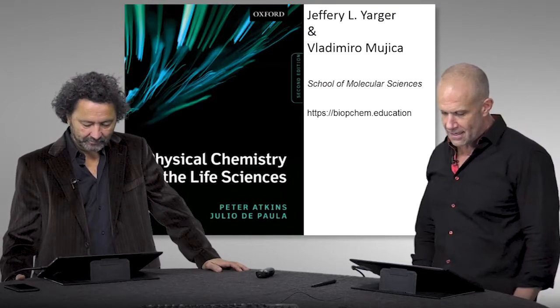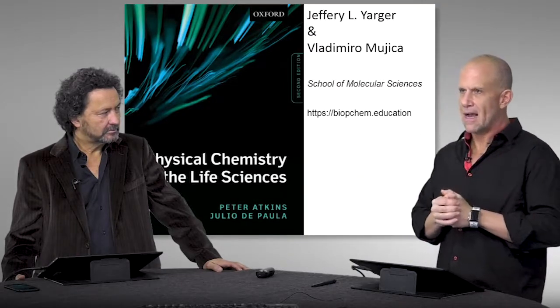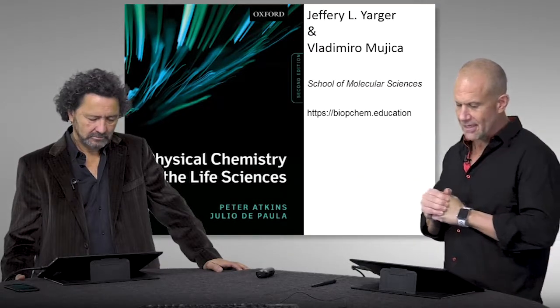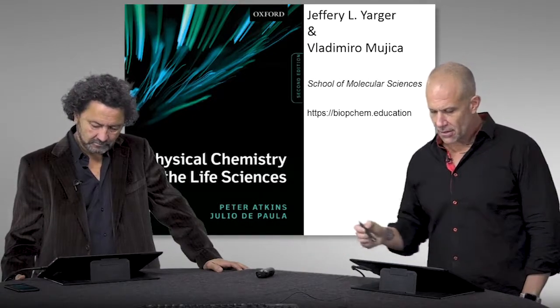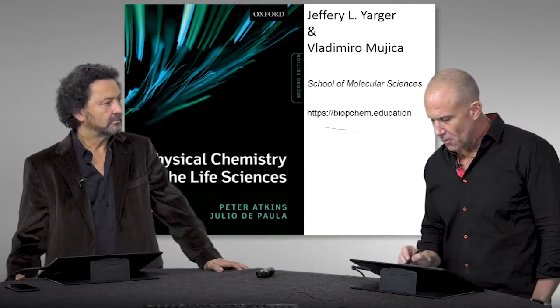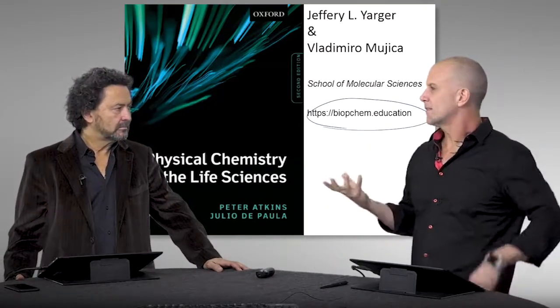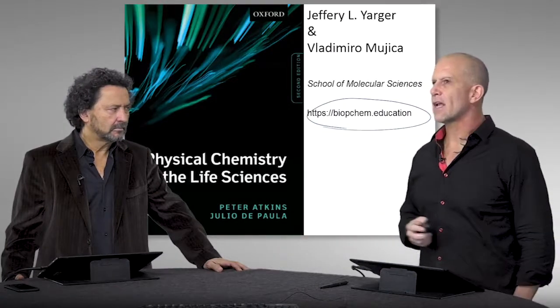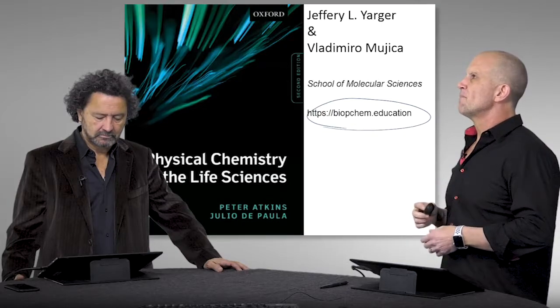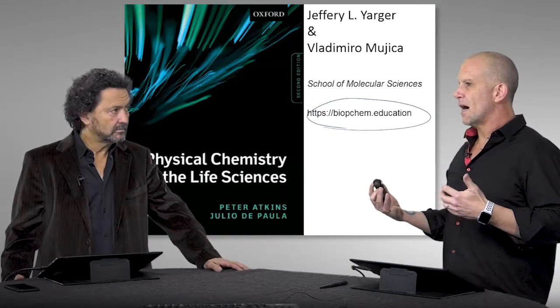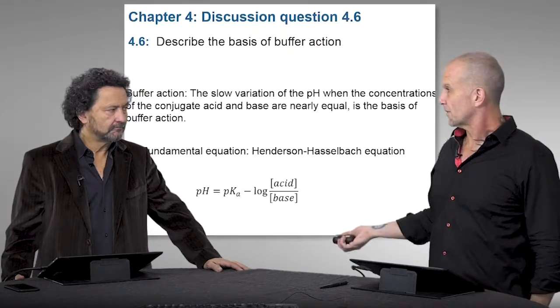So Vladi, today we're looking at discussion questions in Atkins Physical Chemistry for the Life Sciences, second edition. As always, I'll remind students that we have a lot more resources on this publicly available website. In this video today, we're going to specifically look at a problem out of chapter four, which is their general discussion about chemical equilibrium as it relates to biological systems.